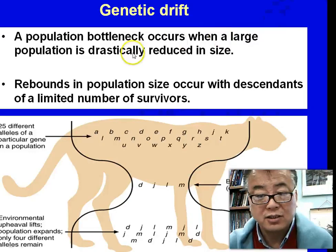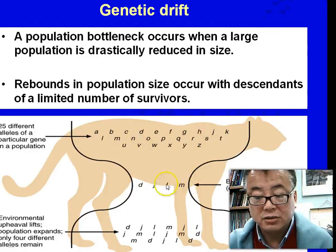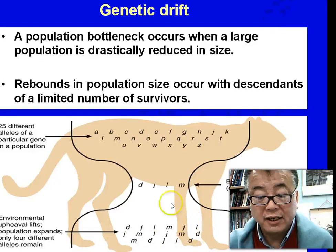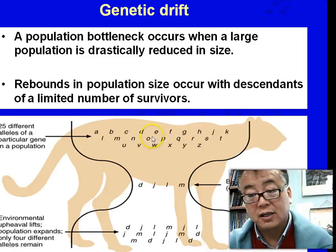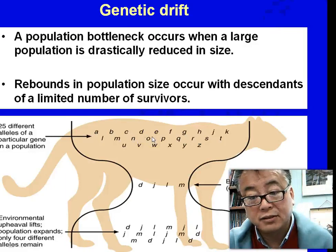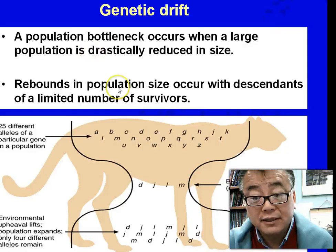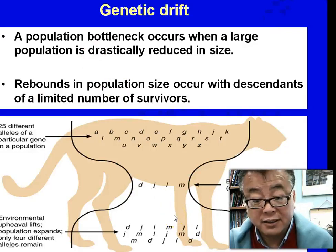When a large population is drastically reduced in size — for example, like 26 alphabet characters drastically reduced to only 4 — the future generations can only have the character of those 4. You can see the change in genetic allele frequency versus the original population. That's called population bottleneck. The population can regain size but will have limited genetic variation.